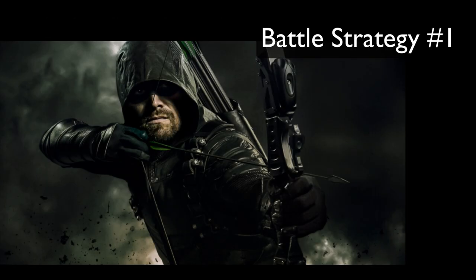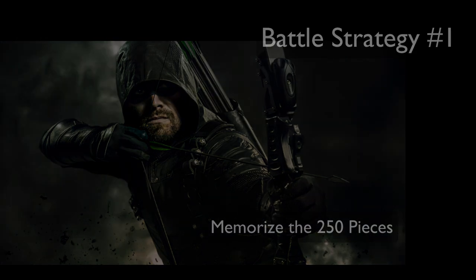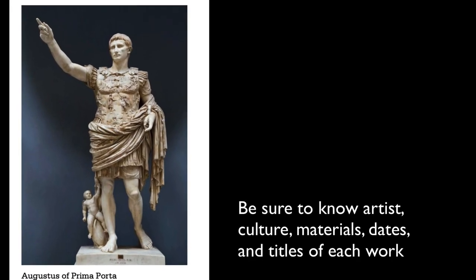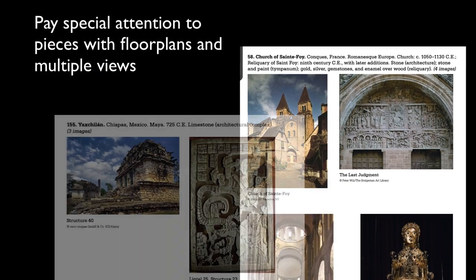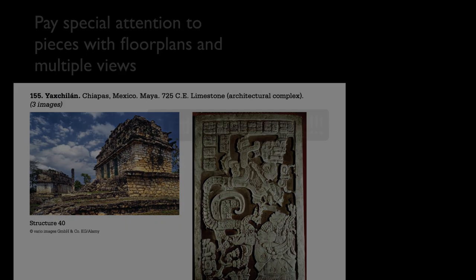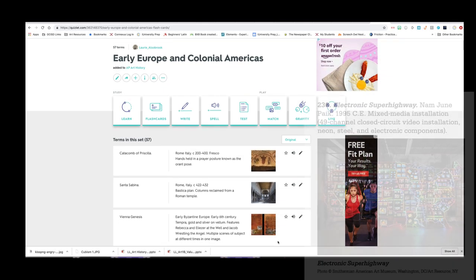Battle strategy number one: memorize the 250 pieces. In every question you will be asked to identify some component of a work of art from the 250 tested pieces. I cannot overemphasize how important it is to memorize the identification information of each piece. It can be boring, but it is truly the foundation of a winning campaign to get a high score on your AP test.